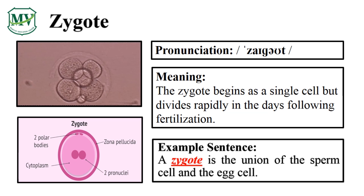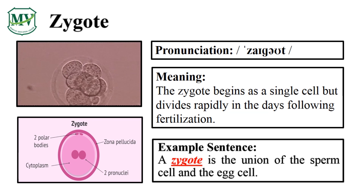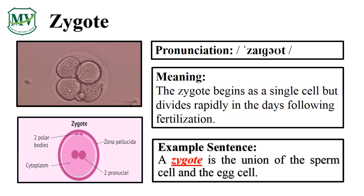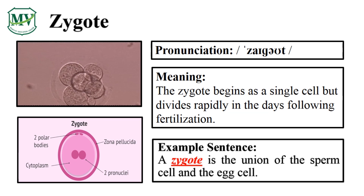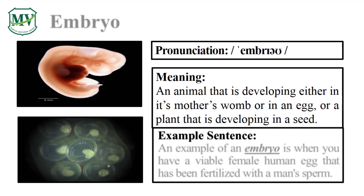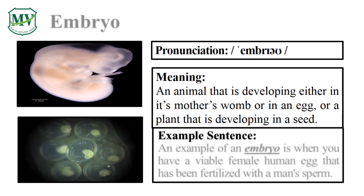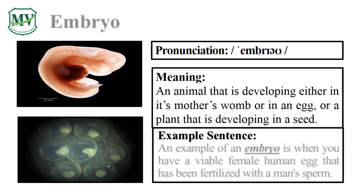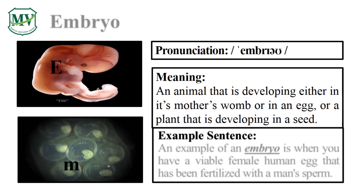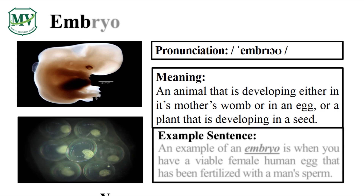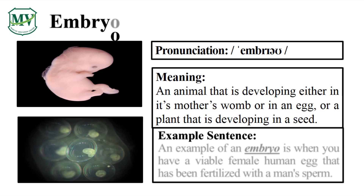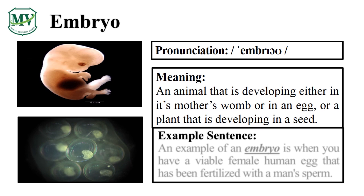Can you read the sentence on your own? Wonderful! Let's learn another one. Please say the word with me. Embryo. Let's say it again — embryo. E-M-B-R-Y-O. Embryo. That was awesome!